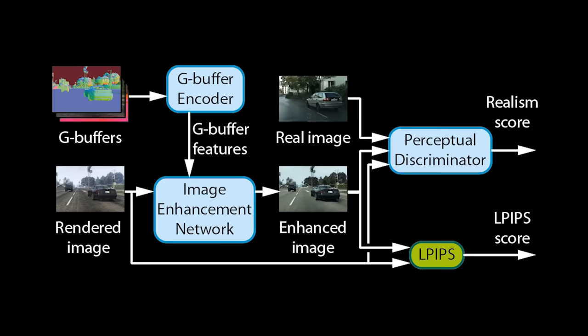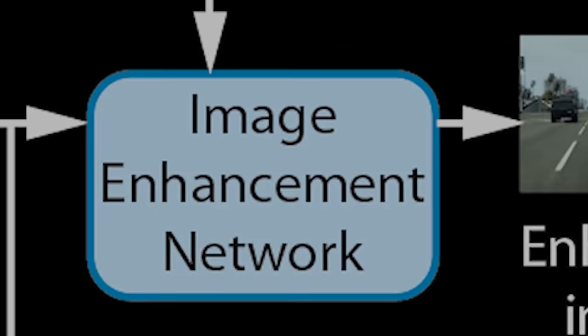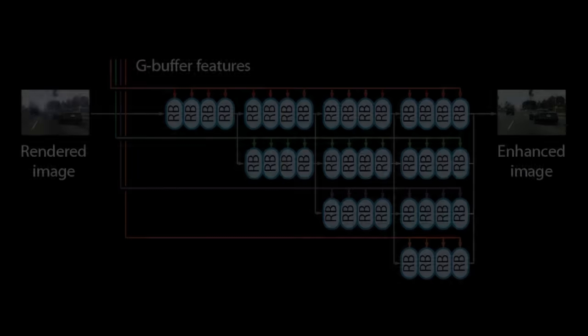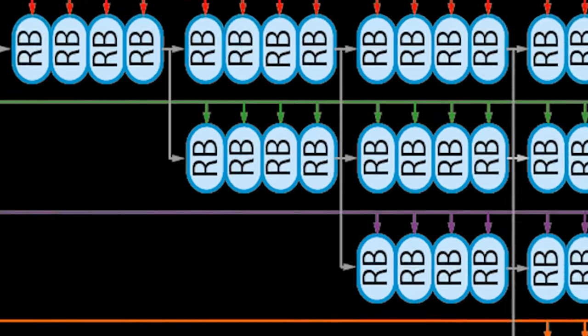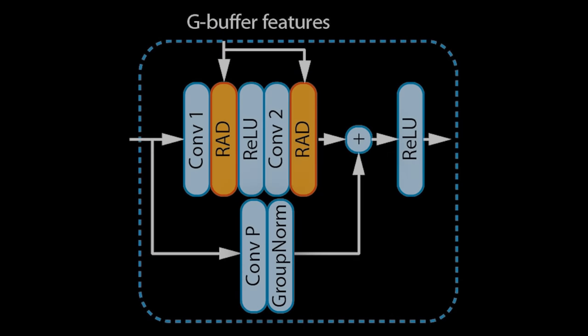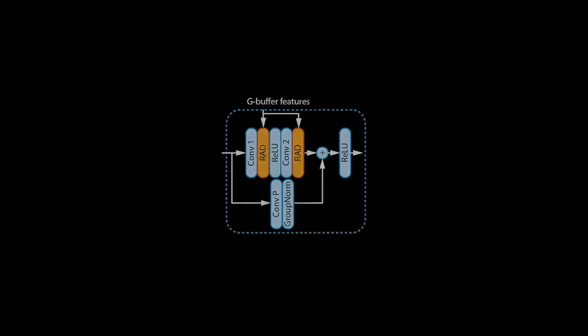Let us now look at the Image Enhancement Network to see what we can do with these multiscale tensors. The Enhancement Network is based on HR-Net, which processes images at multiple scales in parallel. Each scale of the feature tensors matches a scale in the network. The network consists of many residual blocks at each scale. Within the residual blocks, we replace the batch normalization layers with our own Rendering Aware Denormalization Blocks, or RAD for short. The RAD layers modulate features based on the rendering information in the G-buffer feature tensors. For more details, we refer to our paper.